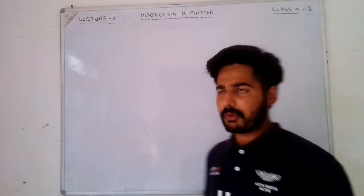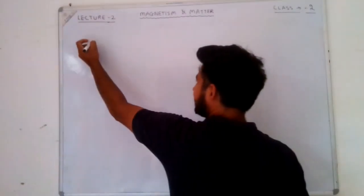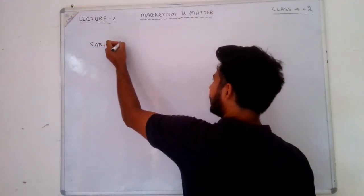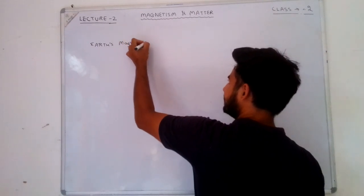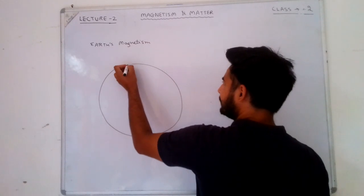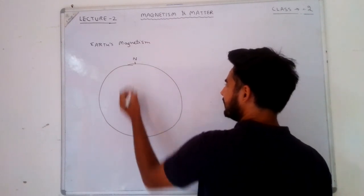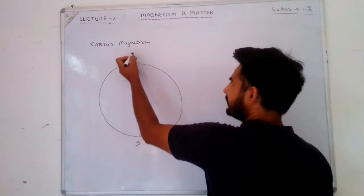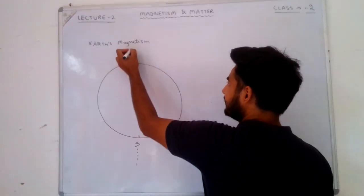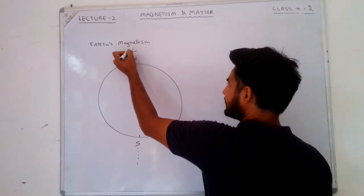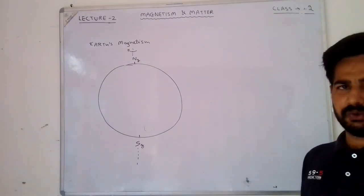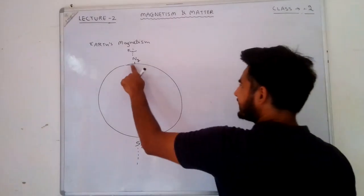Welcome back. We were talking about Earth's magnetism. Let's quickly recap the important points from the previous lecture. We saw that the north pole and south pole lie on the axis of rotation — these are called geographic north and geographic south.